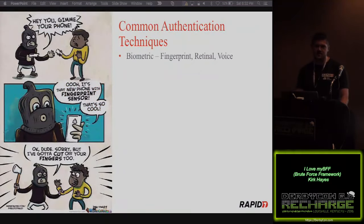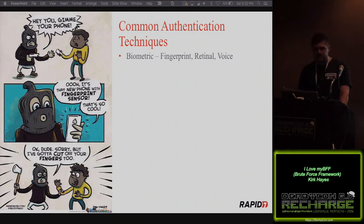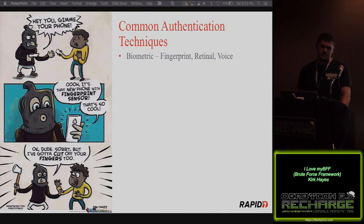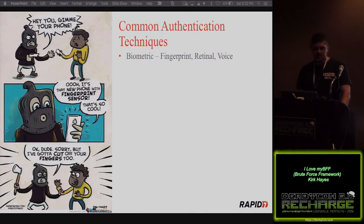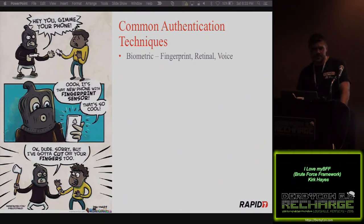Biometrics is the first authentication method — your fingerprint, your retinal scans, voice recognition. It's been around a long time, but it's recently started getting a lot more use from regular people, basically with the iPhone coming out with Touch ID. Every phone now has a fingerprint reader. It makes it nice and easy, and it's going beyond just logging into your phone now. There are apps that are using biometrics as well, which is great.